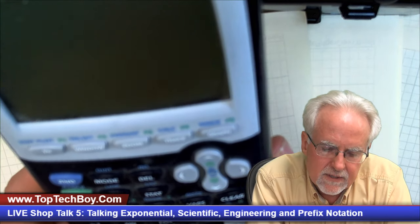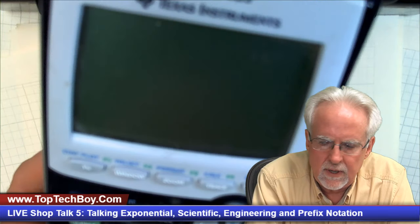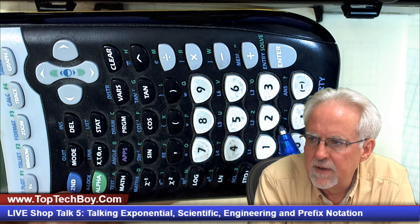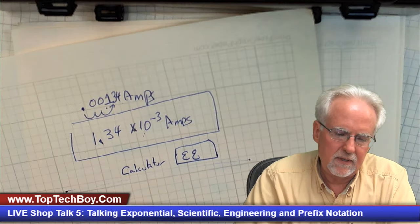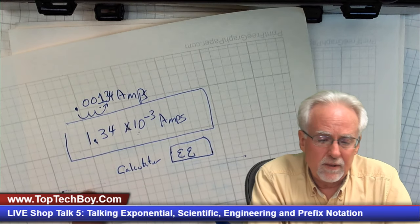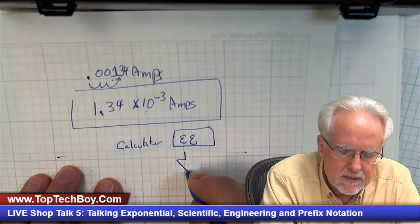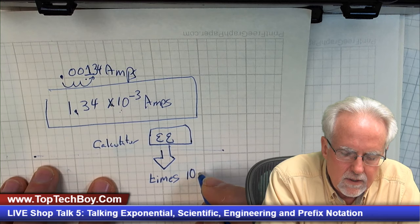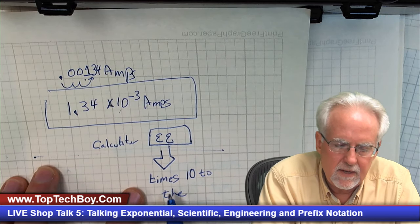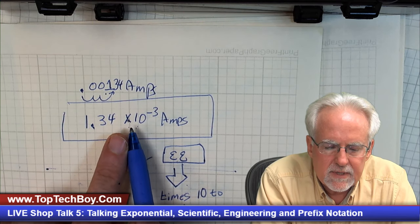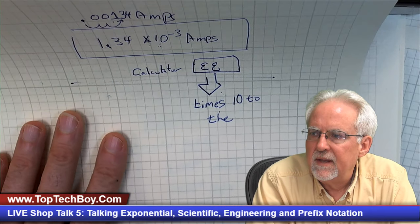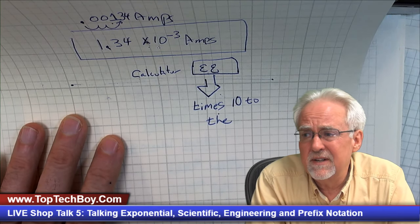The calculator can't say 'one point three four times ten to the minus three.' What it has is a key labeled EE. On the TI-84, it is the blue EE that is under the comma — that means you hit Second, then EE. What EE means is 'times ten to the.' So how would I write 1.34 times ten to the minus three using the calculator method? It would be 1.34 EE minus three. The minus here is the change sign button, not the subtraction sign.